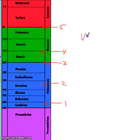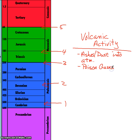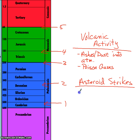One of the common themes across these extinctions is volcanic activity. Volcanic activity will not only spew ash and dust into the atmosphere, but could also give off poisonous gases, which might also contribute to extinctions. The other common cause is asteroid strikes, which kick up dust, particles, and other materials into the atmosphere.